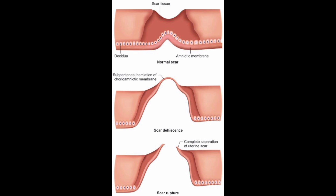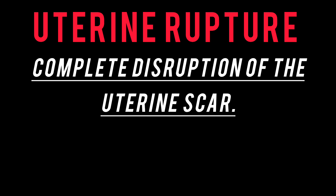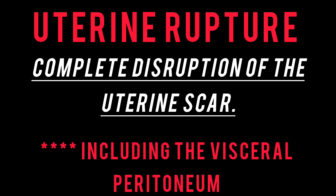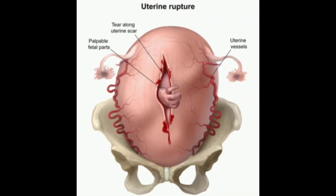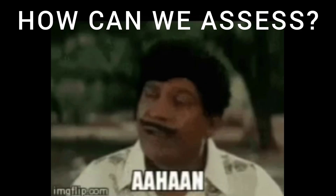The risk of hemorrhage and adverse maternal and perinatal outcomes in uterine dehiscence is not as severe as in uterine rupture. Uterine rupture is defined as a complete disruption of the uterine scar, including the visceral peritoneum. This is a very catastrophic event where both the mother and child are at risk — the child particularly at risk of hypoxia. The woman can present with various signs and symptoms which can be identified clinically.